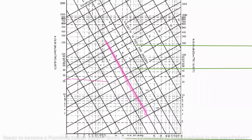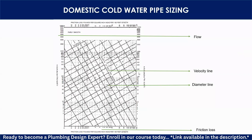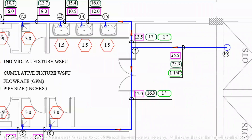Where the 23.3 GPM line and the 5 fps velocity line intersect, check the pipe diameter lines. This intersection point falls between pipe size 1½ inch and 1¼ inch, but it is close to 1¼ inch. Therefore, the selected pipe size for section 7–16 is 1¼ inch.